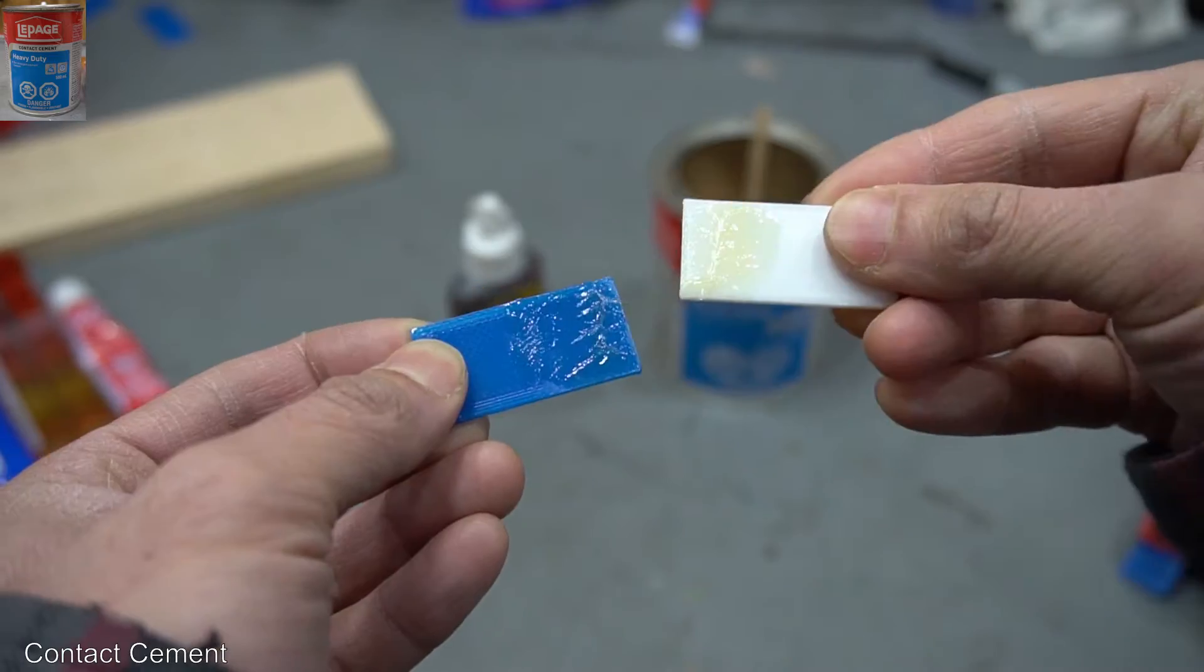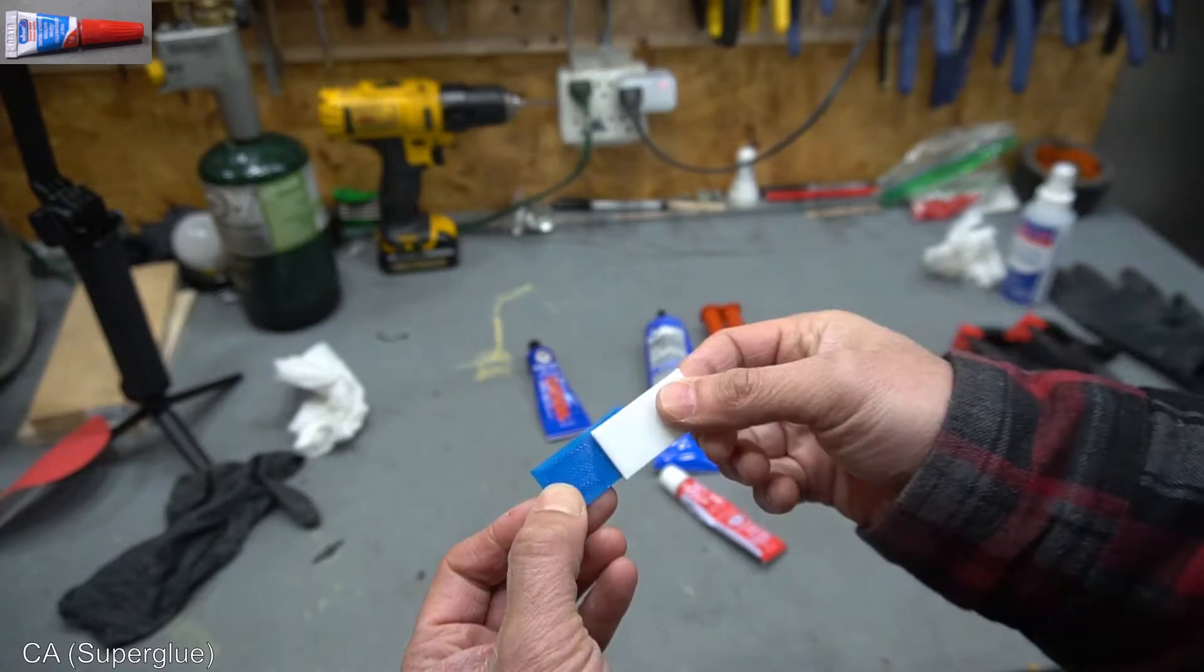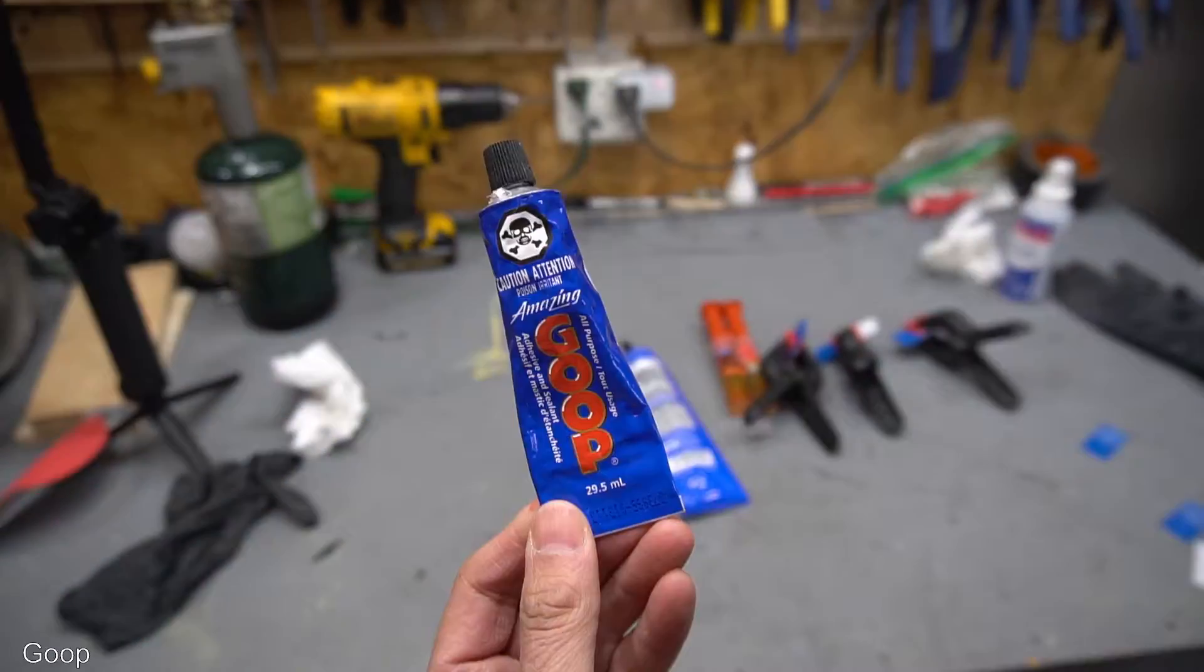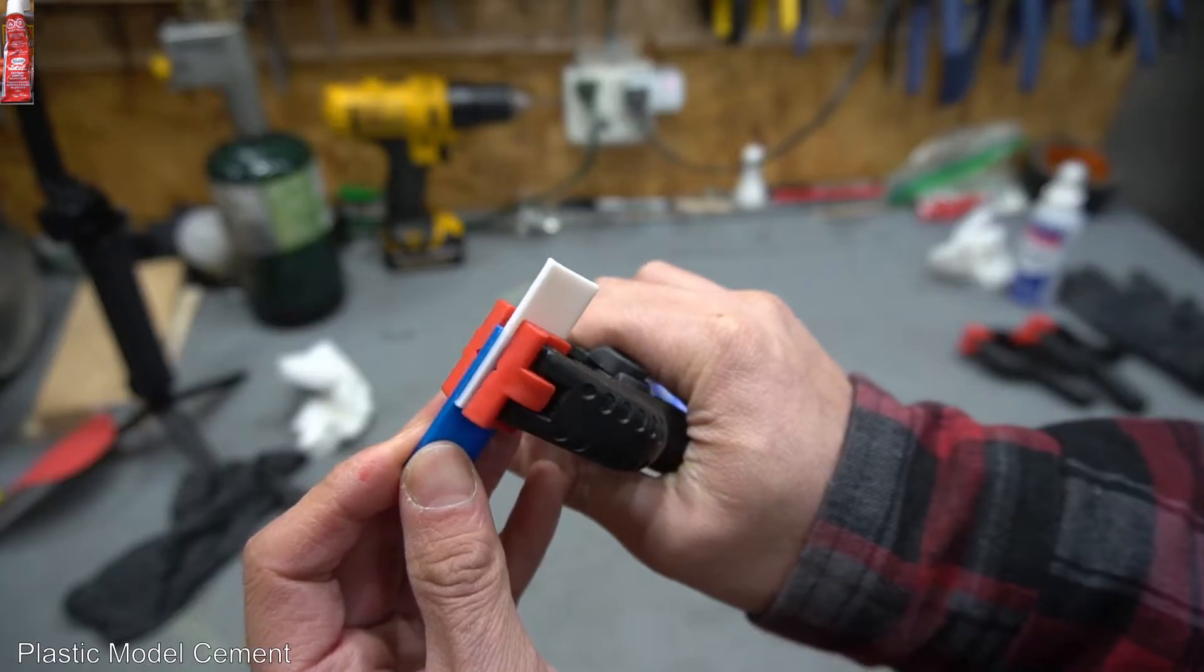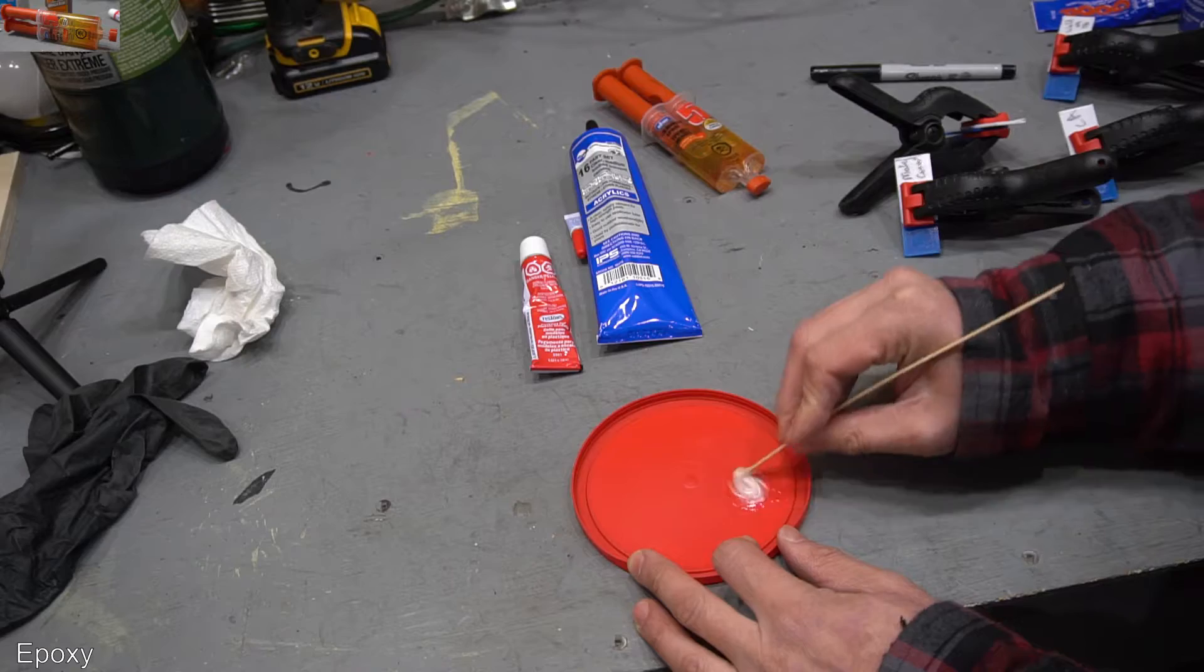So for the glues that I'm going to test in no particular order: Contact Cement, CA aka Super Glue, Weldon 16, General Purpose Goop, Plastic Model Cement, Polyurethane Glue, and lastly, Epoxy.